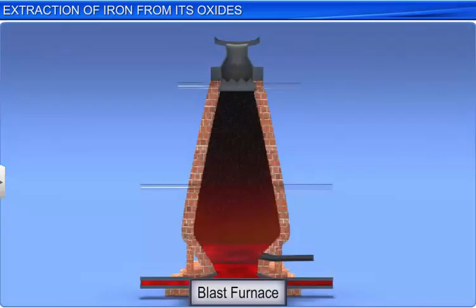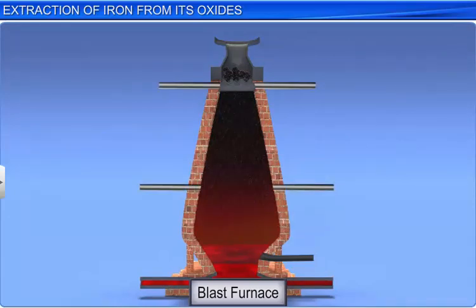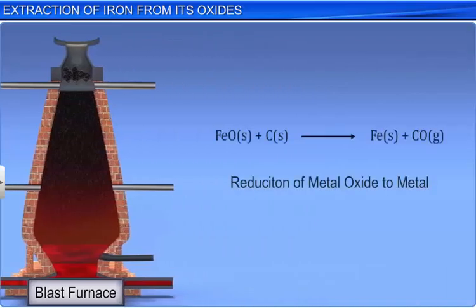This concentrated ore is mixed with limestone and coke, and sent into a blast furnace to reduce the metal oxide to the metal. Here, coke reduces ferrous oxide to iron, releasing carbon dioxide, as shown in the equation here.